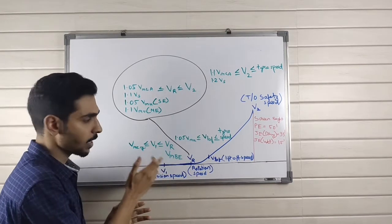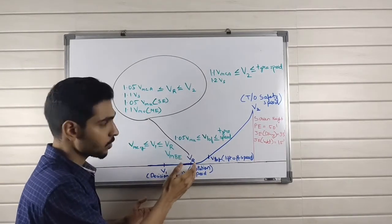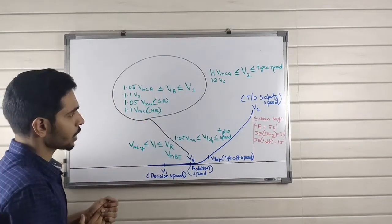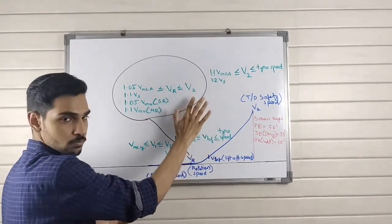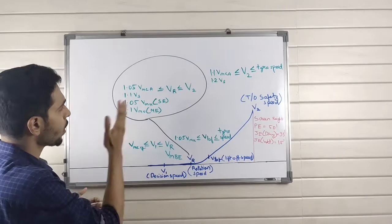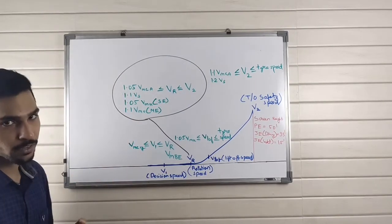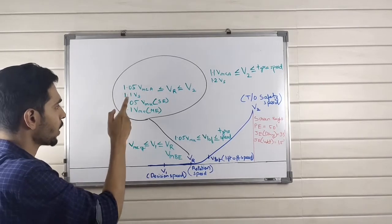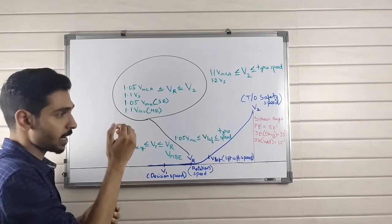Next is VR. As you can see, the higher limit of VR is V2. The lower limits are these four: 1.05 VMCA, 1.1 VS, 1.05 VMU for single engine, and 1.1 VMU for multi-engine, which I'll explain next.